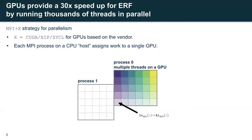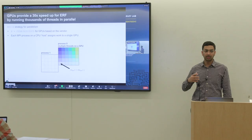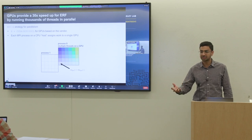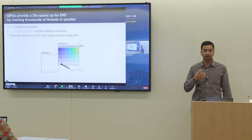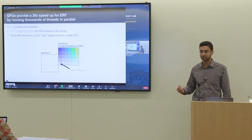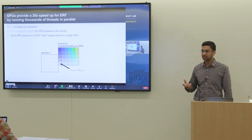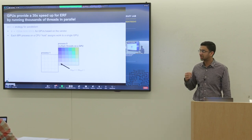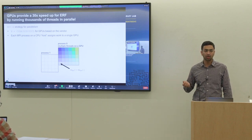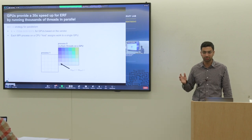Moving from CPU parallelism to GPUs: here again we have the MPI-plus-X strategy, but now each MPI process assigns work to a single GPU using the interface based on the target GPU vendor — for example, the CUDA, HIP, or SYCL interface for NVIDIA, AMD, and Intel GPUs. Each GPU thread works on a single mesh cell. We see at least a 30 times speedup on Perlmutter's GPU nodes using GPUs compared to using all the CPUs on those nodes.